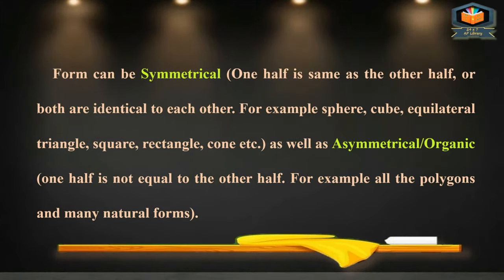Form can be symmetrical — one half is the same as the other half, for example sphere, cube, equilateral triangle, square, rectangle, and cone. Form can also be asymmetrical or organic, where one half is not equal to the other half — for example, all polygons and many natural forms.